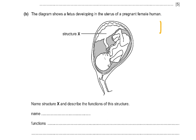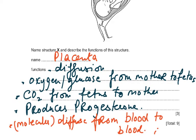The diagram shows a fetus developing in the uterus. Name structure X and describe its function. Structure X is the placenta. It allows the transfer of substances between the mother and fetus without the blood mixing — the blood groups could differ and pressures also differ. Oxygen and glucose diffuse from mother to fetus since the fetus cannot inhale but is respiring. Carbon dioxide diffuses from fetus to mother. The placenta also produces progesterone.